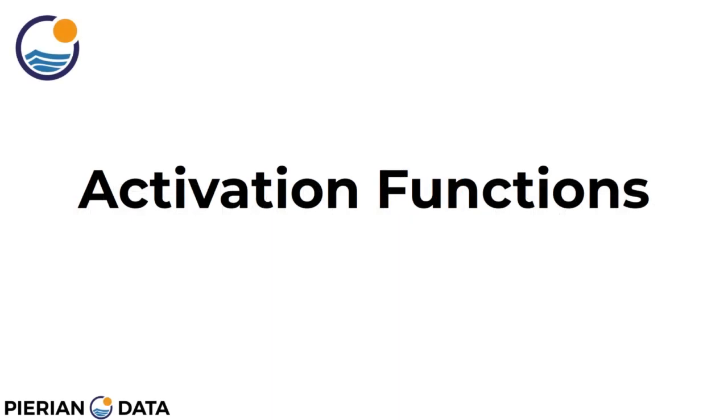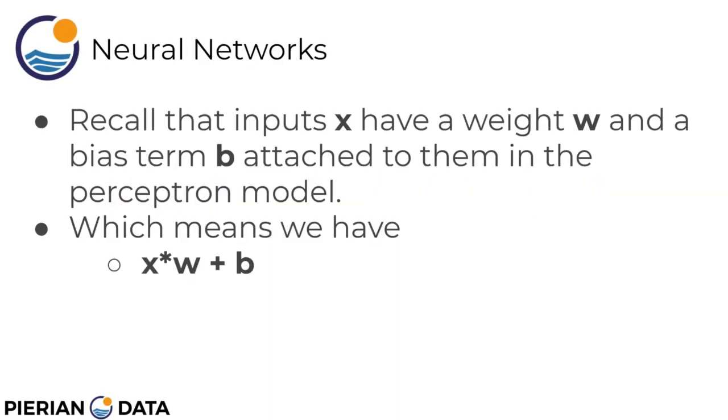Welcome back everyone to this lecture on activation functions. Recall from our neural network models that inputs x have a weight assigned to them w, and then we also add in a bias term attached to them in that perceptron or neuron model. As a formula, we have the input x times w plus b.